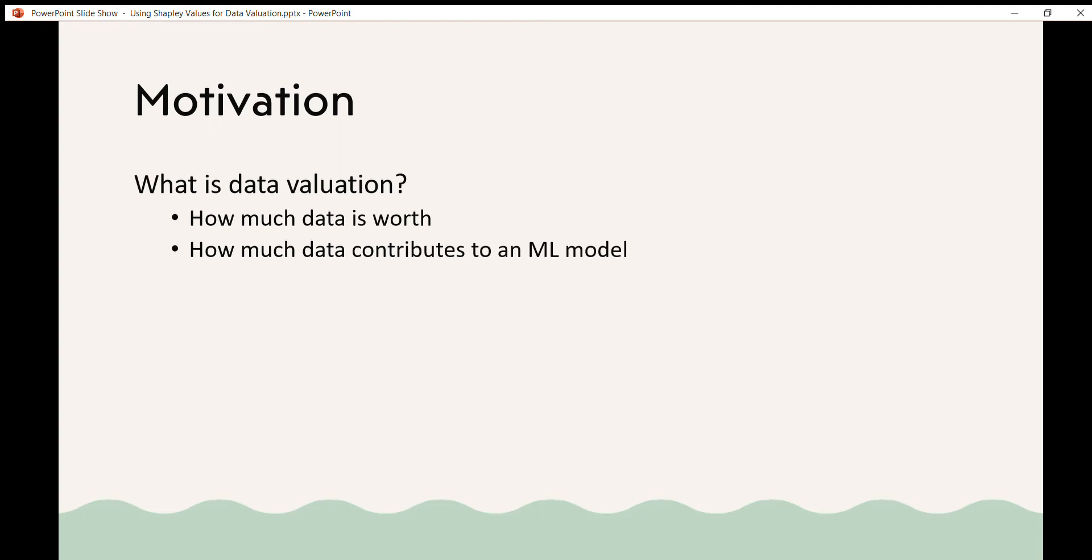In the case of machine learning, it can be thought of as how much data contributes to a specific model, and this is model and task specific. Data that might be really important to one model or one task may not be important to a different model.